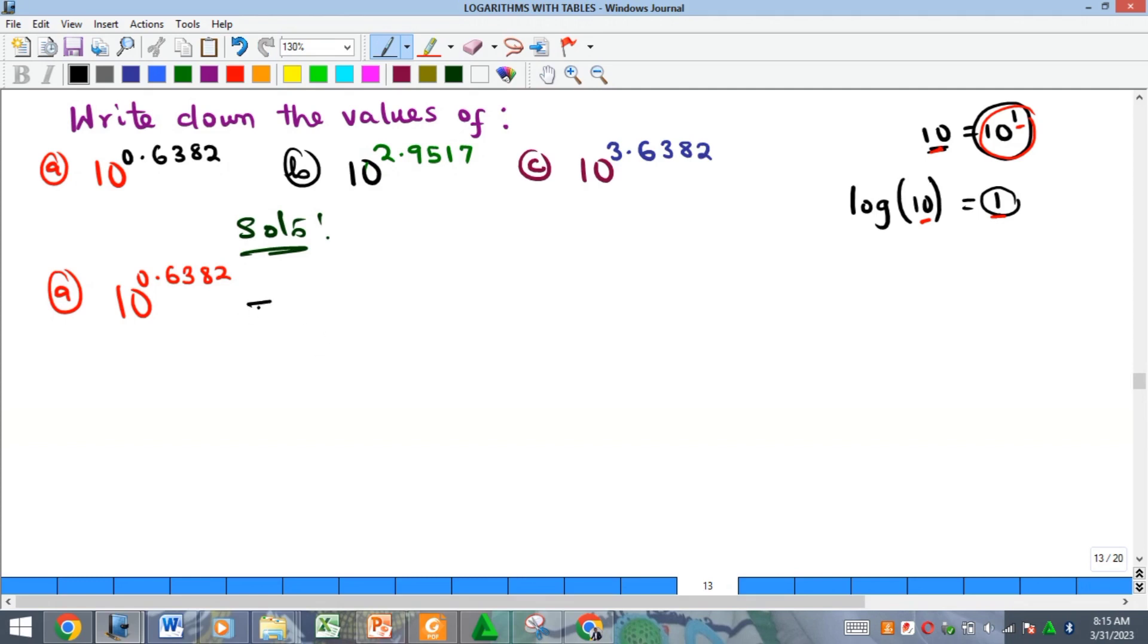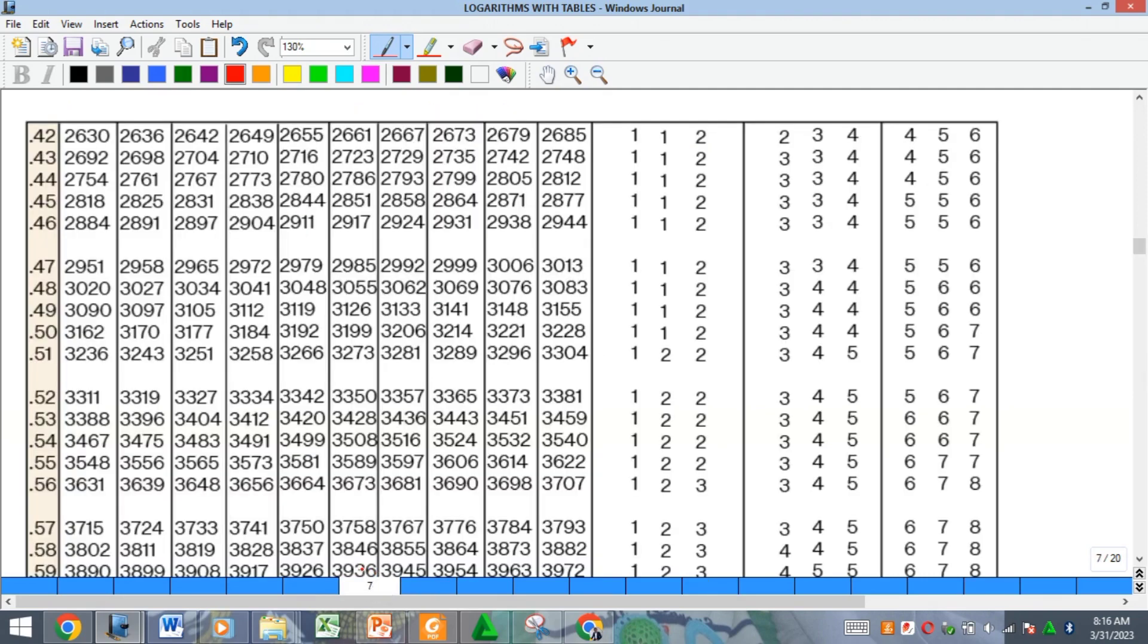This now means that we should find the antilog of the power you have there, which is 0.6382. So can we do this now? What is the antilog of this? You remember we use the mantissa, that's the decimal part, to get the number, and then we use the characteristic to get the position of the decimal point. In other words, for here we are looking for 0.63 under 8, difference 2.